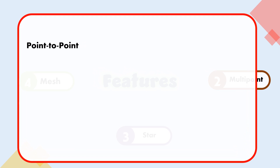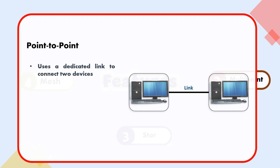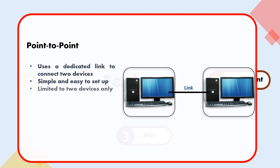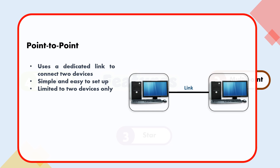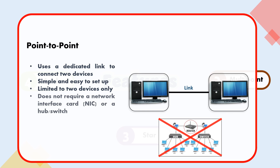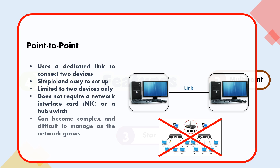Point-to-point uses a dedicated link to connect two devices. It is simple and easy to set up, but limited to two devices only. It does not require a network interface card, NIC, or a hub switch. However, it can become complex and difficult to manage as a network grows.